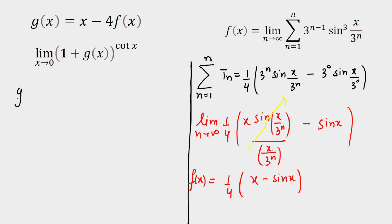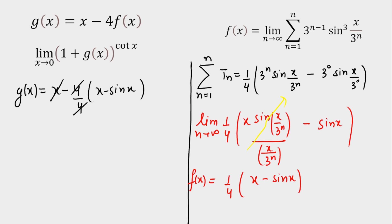g(x) equals x minus 4 times f(x). Substituting f(x) = (1/4)(x − sin x), we get g(x) = x − 4·(1/4)(x − sin x). The 4s cancel and x − x cancels, giving g(x) = sin x.